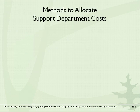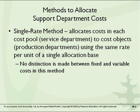There are methods to allocate support department costs. The single rate method will allocate costs in each cost pool — usually that cost pool would be the entire service department — to cost objects, which would be the production departments. They would use the same rate per unit of a single allocation base, taking all the costs divided by some measure of activity. No distinction is made between fixed and variable costs when this method is used.